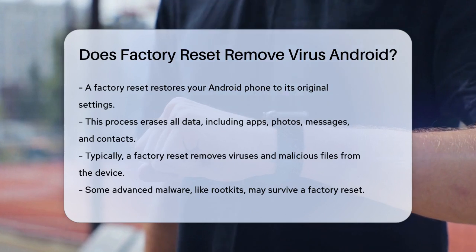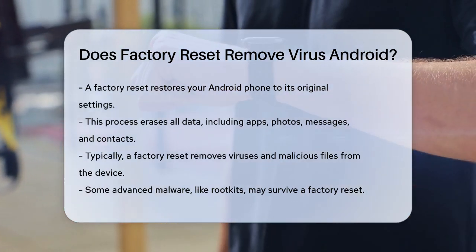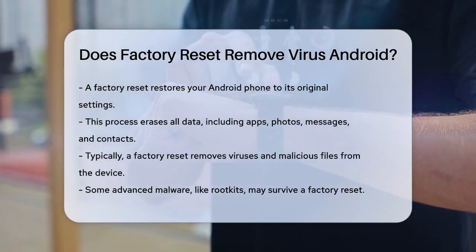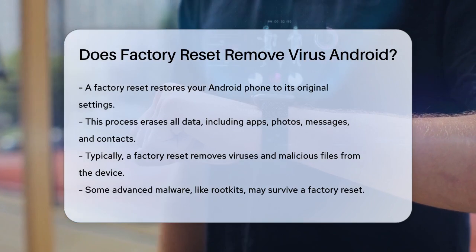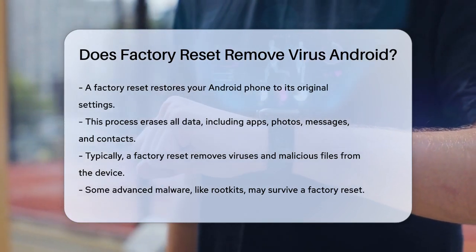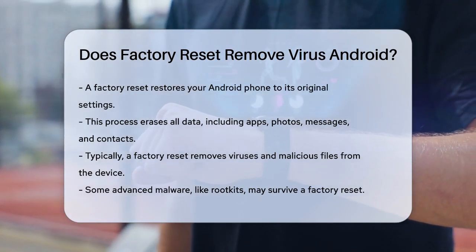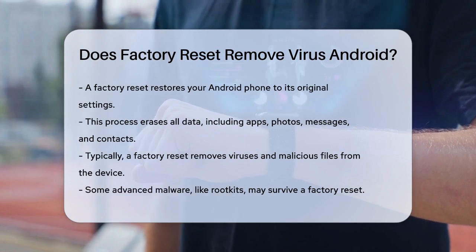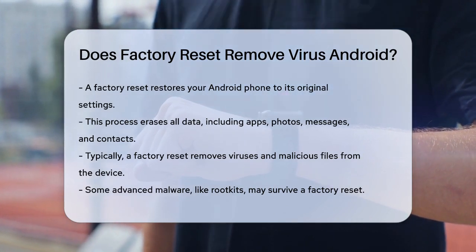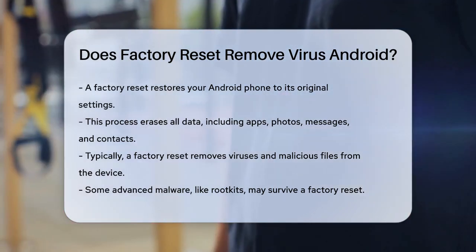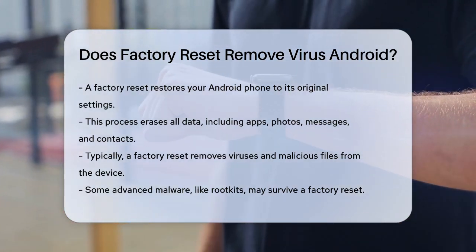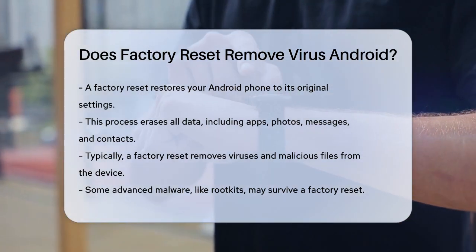A factory reset is a powerful tool that returns your phone to its original settings, just like when you first took it out of the box. This process erases all your data, including apps, photos, messages, and contacts, essentially giving your phone a clean slate.